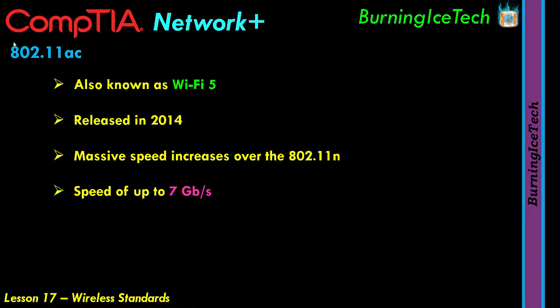The 802.11ac has massive speed increases over 802.11n, coming in at speeds of up to 7 gigabits per second — really fast compared to the first standards we discussed. This standard operates on the 5 gigahertz frequency range. There is simply way too much interference and noise in the 2.4 GHz range — too many devices — so it's not surprising to see newer frequencies moving away from 2.4 gigahertz.